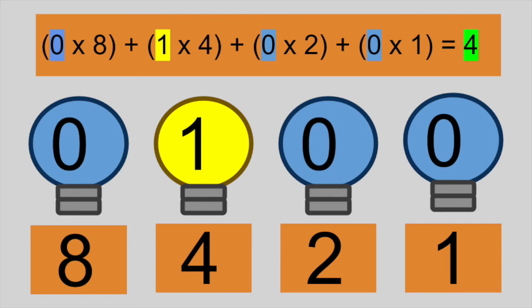To represent the value 5, we add 1 times 4 plus 0 times 2 plus 1 times 1, so it's 4 plus 1.